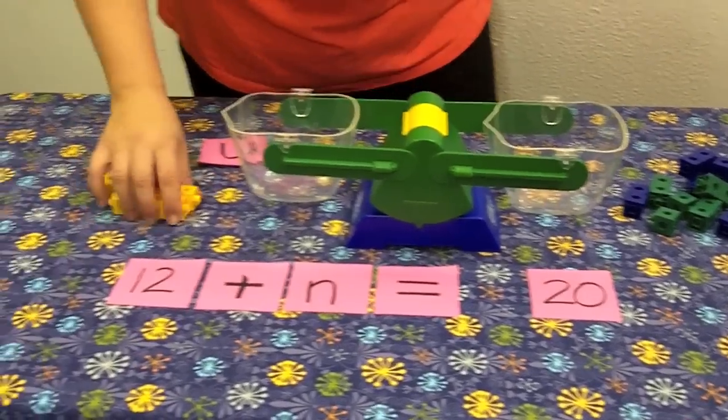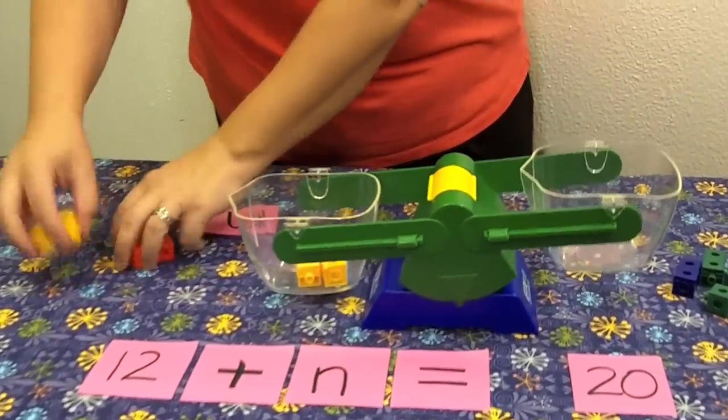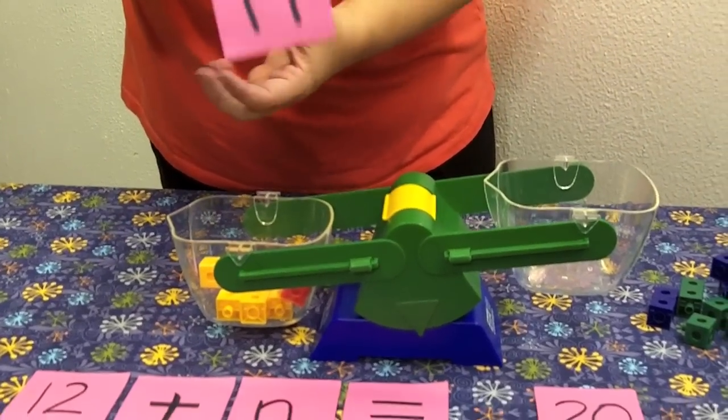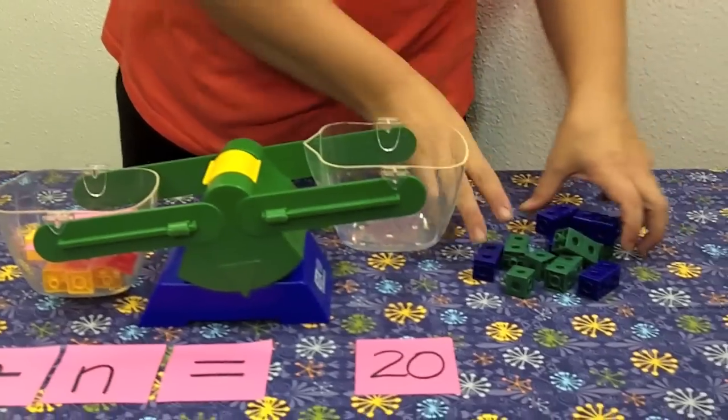Let's go ahead and show that with our cubes. We have 2, 4, 6, 8, 10, 12 plus n. And on the other side, we have 20.